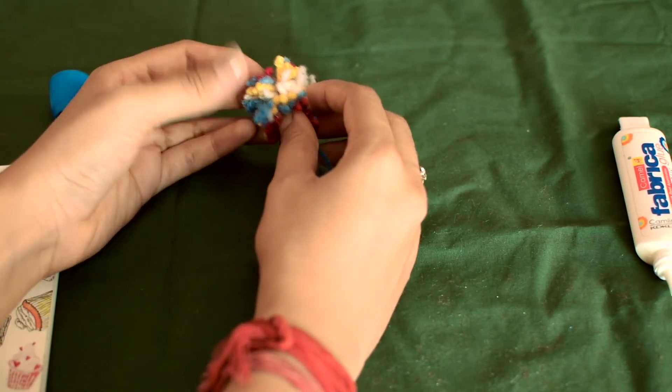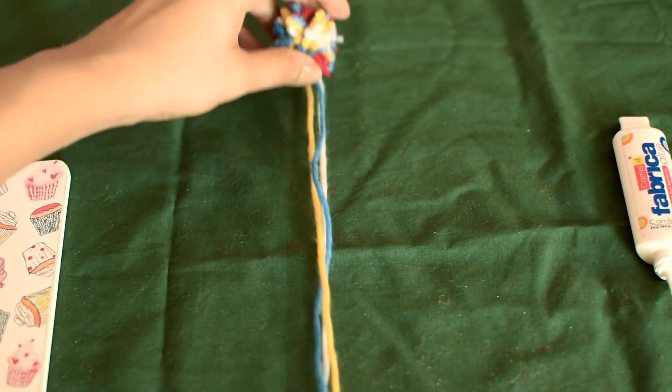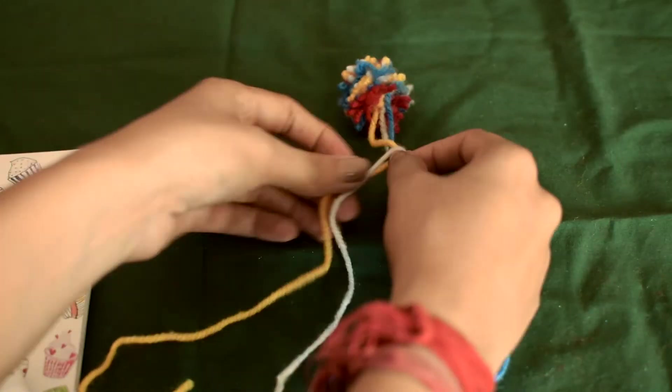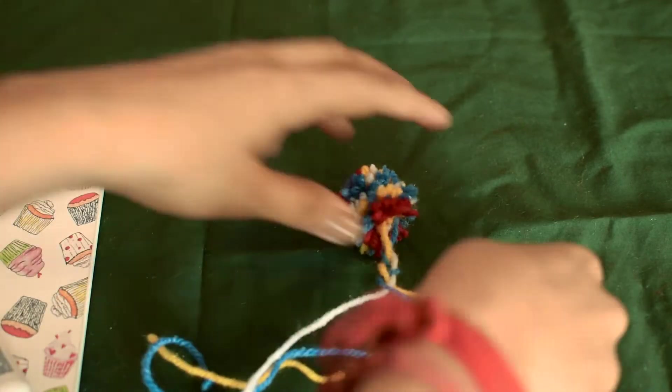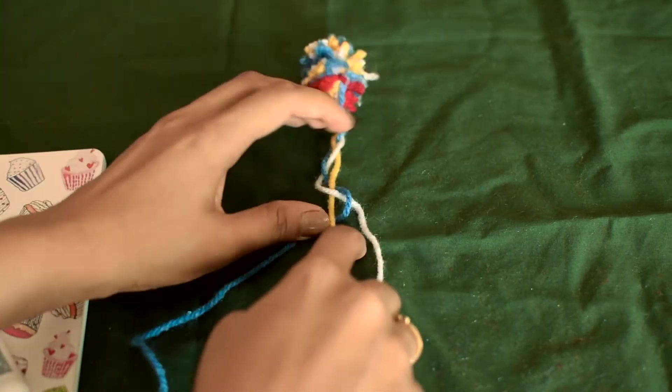You can glue to any side because it's a circular pom-pom so it doesn't really matter. Set it aside for two to three hours to let it dry. After it has dried, I'm going to start braiding. You guys can do any braid; I'm just doing a very regular braid, nothing too complicated.